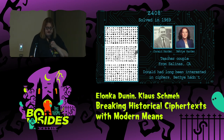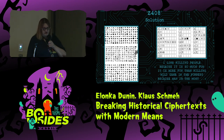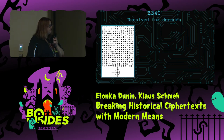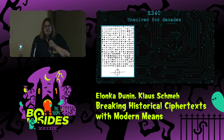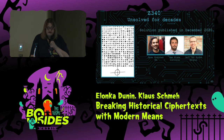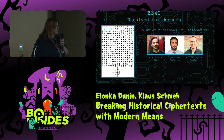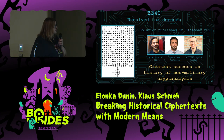From the Z408, you can see it was also homophonic — each letter could potentially have multiple different symbols. Then there was the Z340, which became one of the most famous unsolved codes in the world, remaining unsolved for over 50 years. It was finally solved by a three-man team using modern means including computers and hill climbing, and they published their solution in December 2020. They were on different continents: one from the United States, one from Australia, and one from Belgium. Klaus and I refer to this as one of the greatest successes in the history of non-military cryptanalysis.